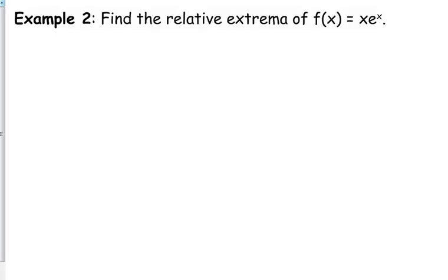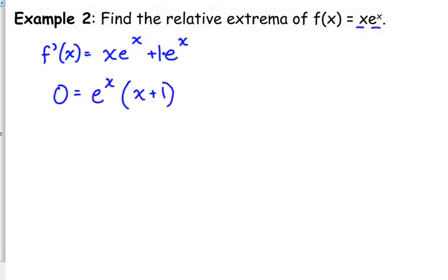Example 2. I bet we do use the product rule. Find the relative extrema of the function x times e to the x. So good reminder. If we are asked to find relative extrema, what do we have to do? Set the derivative equal to 0. So we've got to start by taking the derivative. Yes, it is a product rule. We've got x times e to the x. So first times the derivative of the second plus derivative of the first times the second.